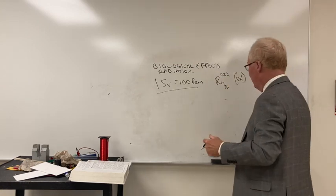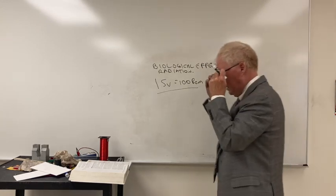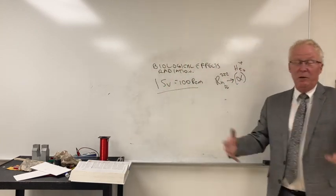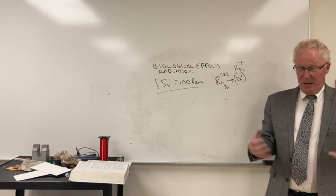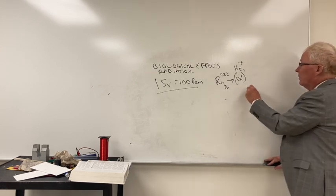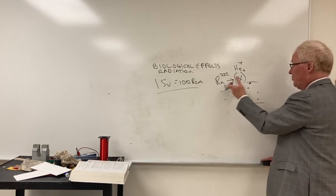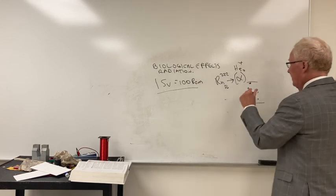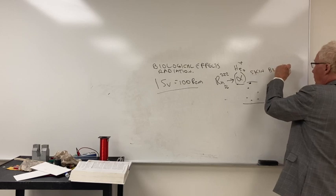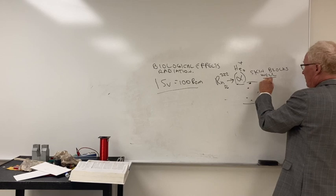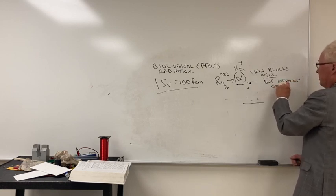This emits an alpha particle, which is a helium nucleus. Radon is dangerous because it emits, there's uranium everywhere, to some degree. It gets decayed, as we talked about in chapter 30. Radon, which is an inert gas, will get into, particularly basements, if it's not ventilated. And that will decay, you inhale it. This is very dangerous, alpha particle.